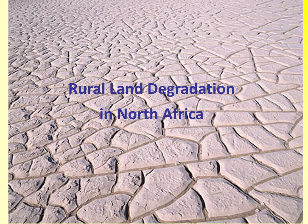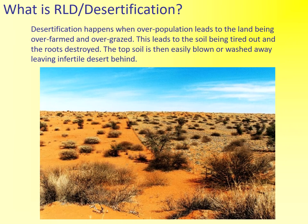This is a video on rural land degradation in North Africa for higher pupils. Rural land degradation is essentially when we damage or degrade the land in rural or countryside areas. RLD and desertification are interchangeable terms. You can read the text on the screen for yourself — pause the video to read it and copy it out as revision notes.